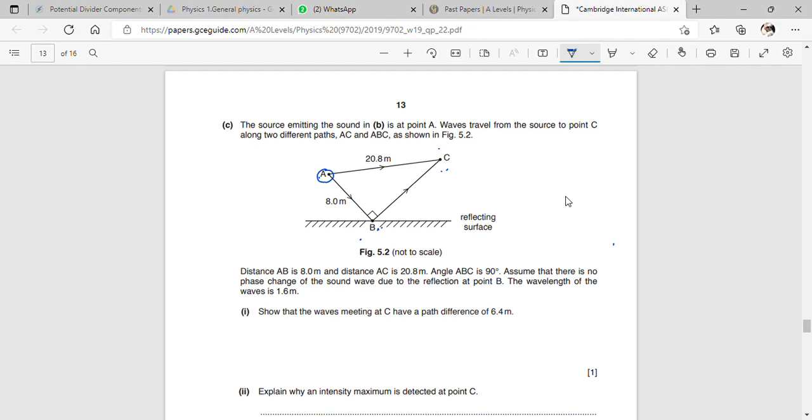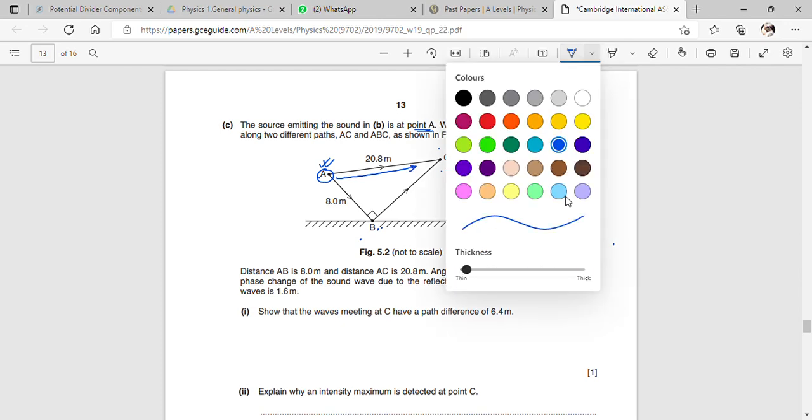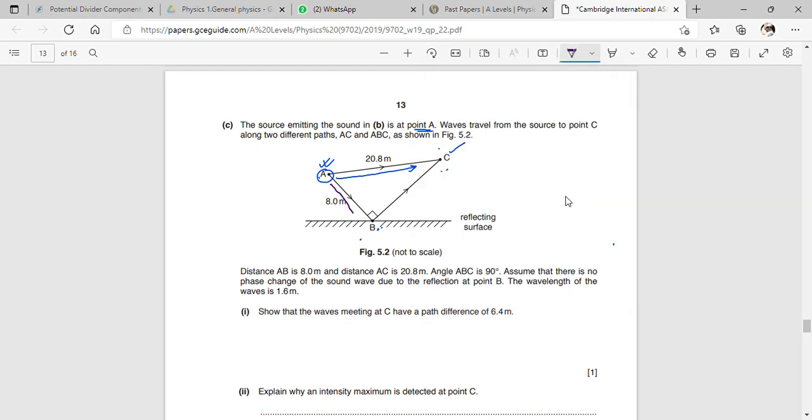Waves travel from the source to point C along two different paths. The source is at point A. Now when it comes to point C, there are two different paths. One is called AC. The other path I will draw from the other color. The other path is AB and then BC.